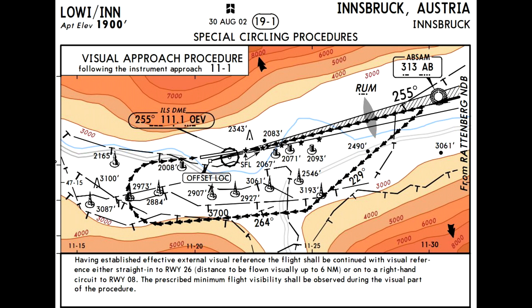It's nothing more than a visual approach to Runway 08. Once you get to Absam, turn left on a heading of 230 degrees, descending from 5000 feet to 3700 feet, by the Innsbruck NDB at 264 degrees. Once you get to the Innsbruck NDB, turn right on a heading of 264 degrees, continuing your descent down to 3700 feet. You turn at approximately three and a half miles DME onto final for the runway, so keep a lookout to the right-hand side.